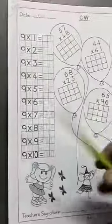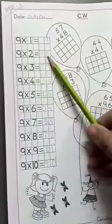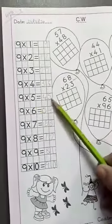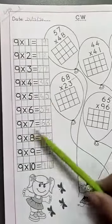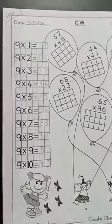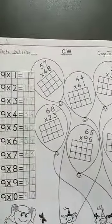First we have the table of 9. We will start: 9 ones are 9, 9 twos are 18, 9 threes are 27, 9 fours are 36, 9 fives are 45, 9 sixes are 54, 9 sevens are 63, 9 eights are 72, 9 nines are 81, 9 tens are 90.